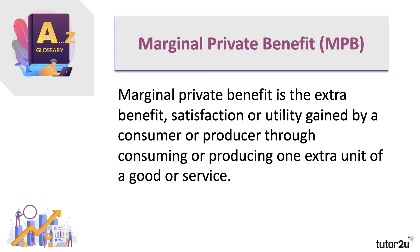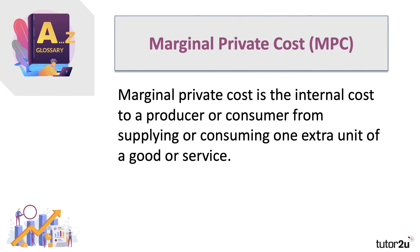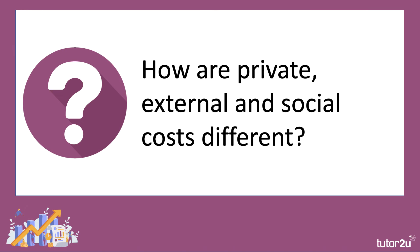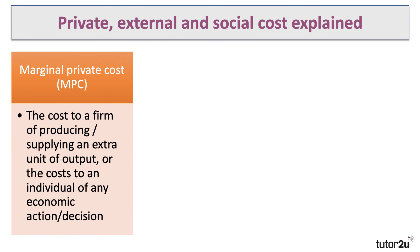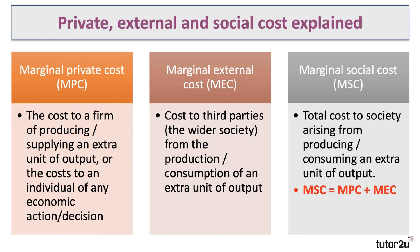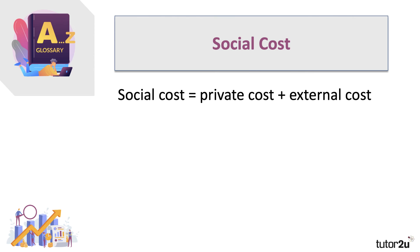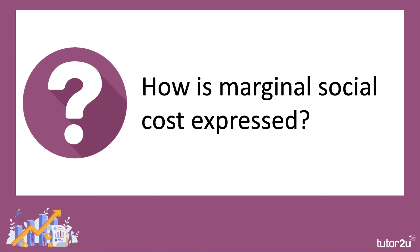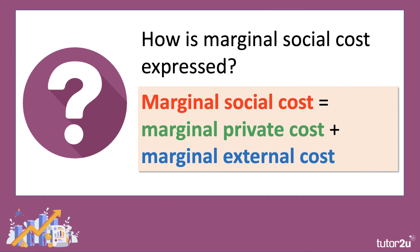Marginal private benefit is the extra benefit or satisfaction gained through consuming or producing one extra unit of a good or service. Marginal private cost is the cost to a producer or consumer from supplying or consuming one extra unit. Marginal external cost is the external consequence of their actions — such as pollution or congestion. Add marginal private cost and marginal external cost together and you get the marginal social cost — the total cost to society from producing or consuming an extra unit. Social cost equals private cost plus external cost.